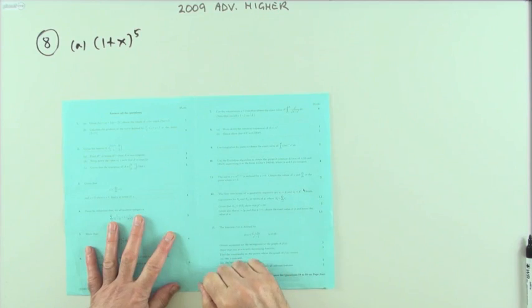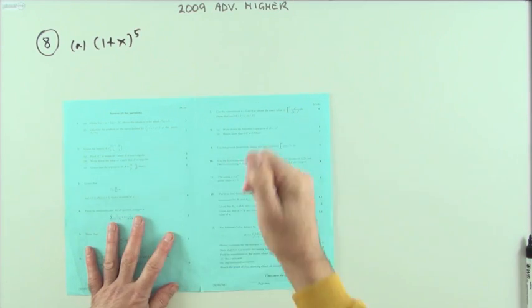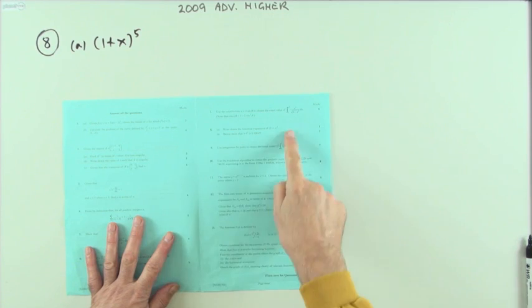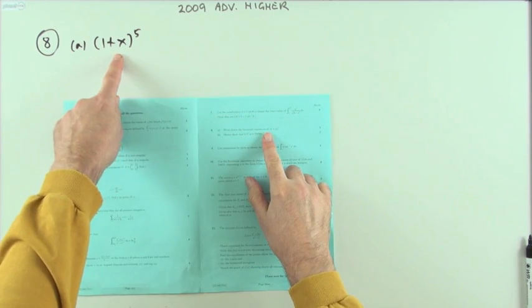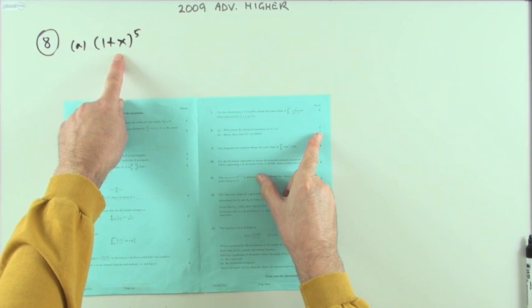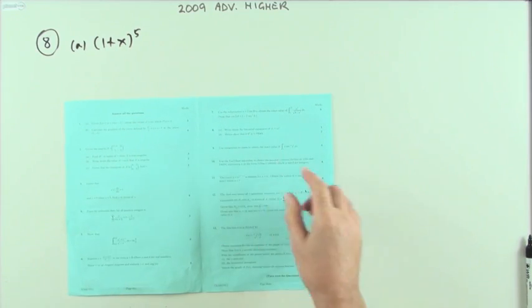Number eight, a binomial expansion - the only one in the 2009 Advanced Higher, and it's only for three marks. Write out this expansion to the power five for one mark, and then do this evaluation of 0.9 to the fifth.